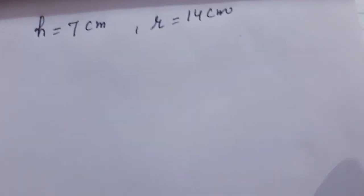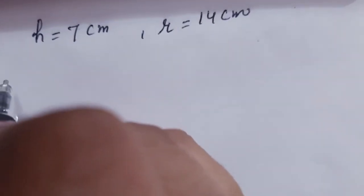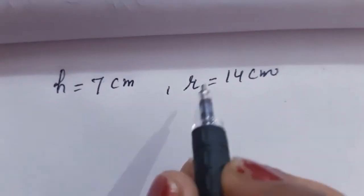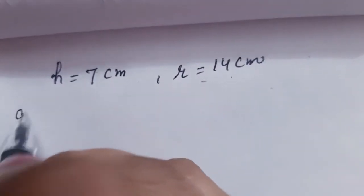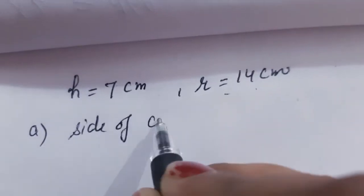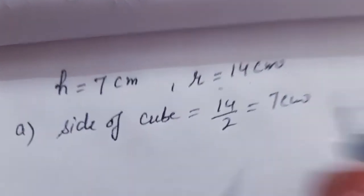Part A: Find the side of the cube. It is given that the side of the cube is half the radius of the cylinder, so the side of the cube will be 14 divided by 2, that is 7 centimeters.